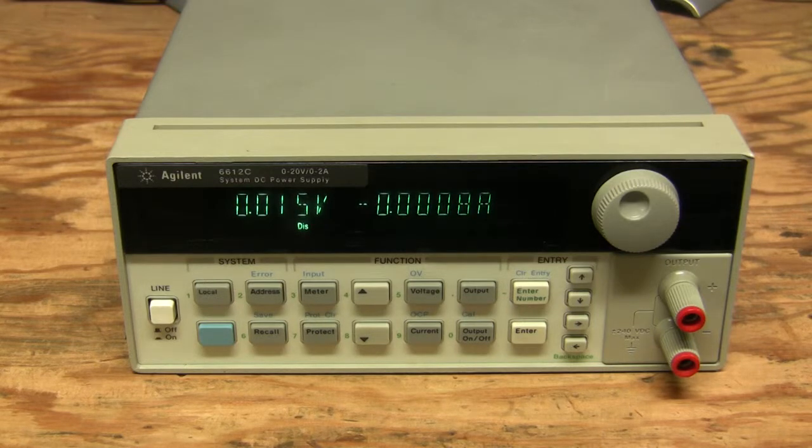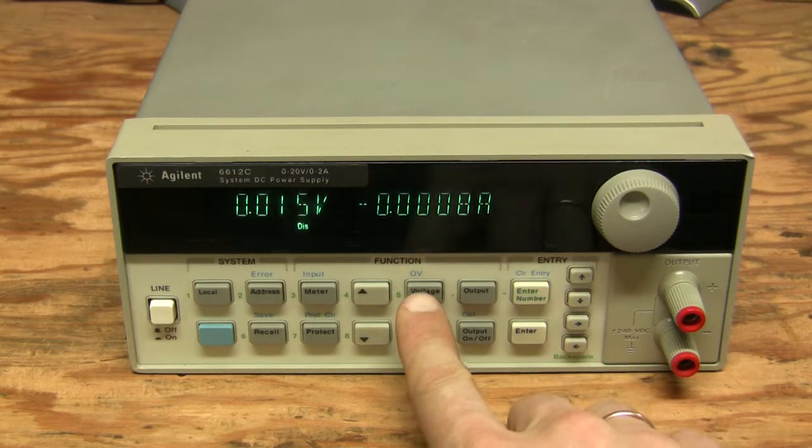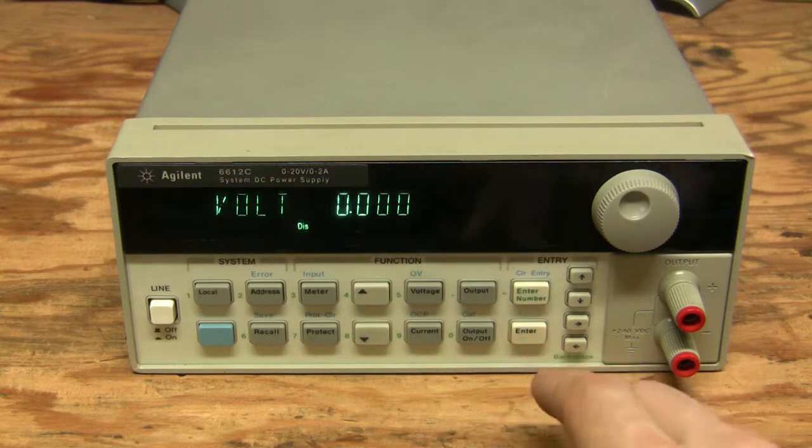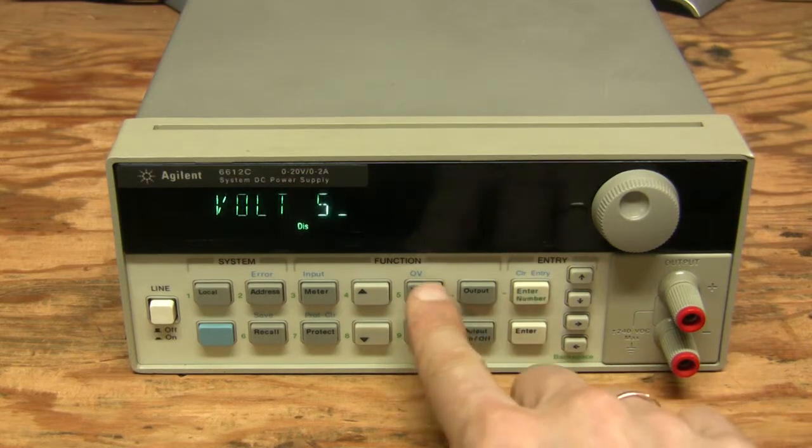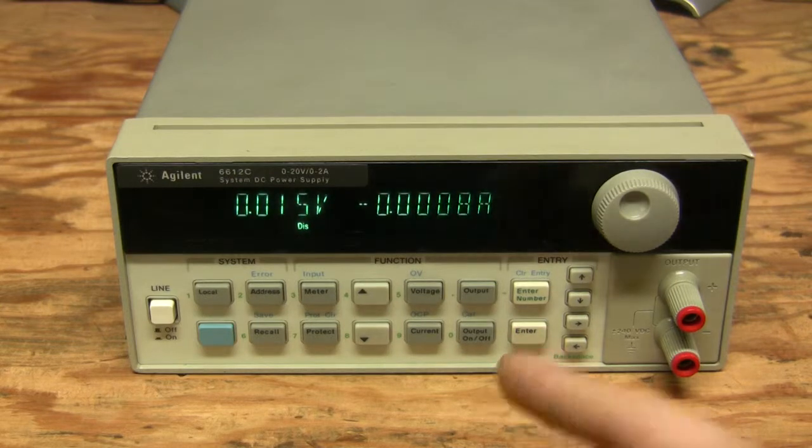For example, now the output is off and we just don't know if we press output on what we will get unless you remember. So let's recall the voltage - we can press voltage and see the setting. It is set to zero right now. Let's set it to five for example, and then we press enter and it disappears.